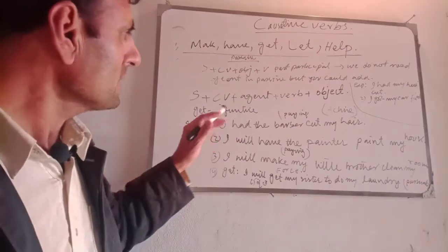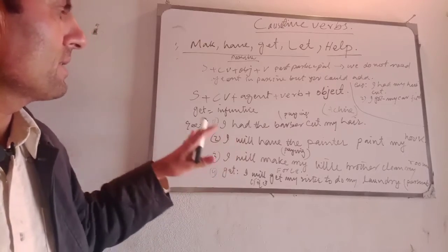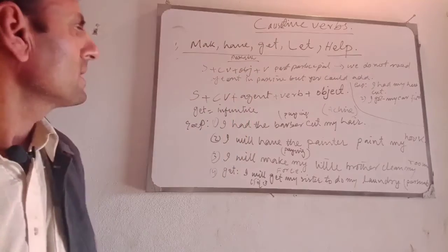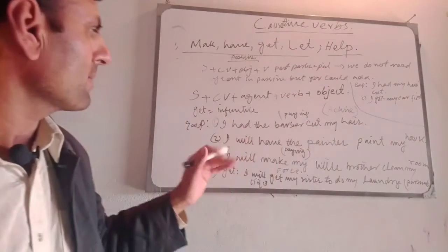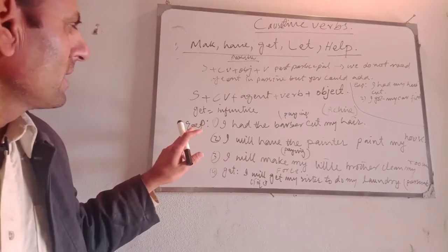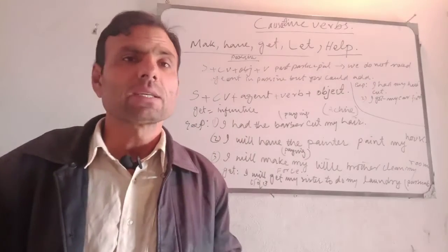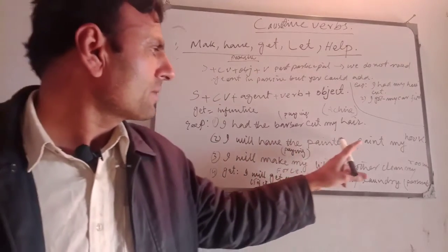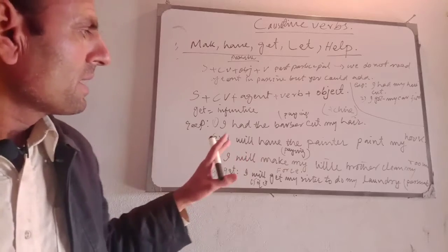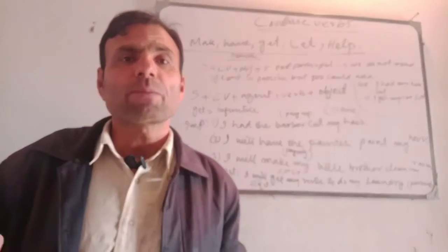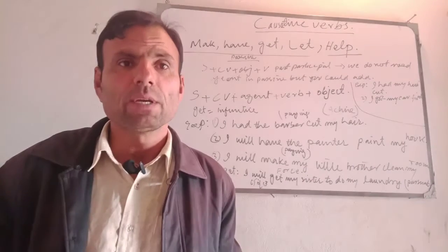The structure for active causative verbs is: subject + causative verb + agent + verb + object. For example: 'I had the barber cut my hair.' Another example: 'I will have the painter paint my house.' If you are having a painter paint your house, it means you are paying him and he is coming to paint your house.